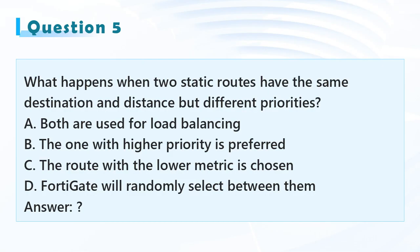Question 5: What happens when two static routes have the same destination and distance but different priorities? A. Both are used for load balancing, B. The one with higher priority is preferred, C. The route with the lower metric is chosen, D. FortiGate will randomly select between them.